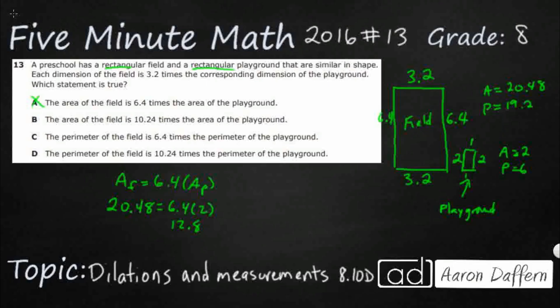It says the area of the field is 10.24. Okay. So let's try that. Let's try instead 20.48 equals, instead of 6.4, 10.24 times the area. Actually, yeah, that looks like it works, right? You double the 10. That's 20. Double the 0.24. That's 0.48. So that's looking like it might work.